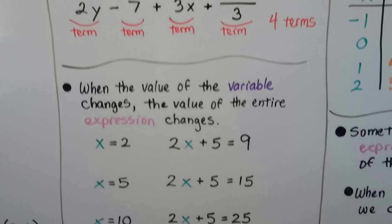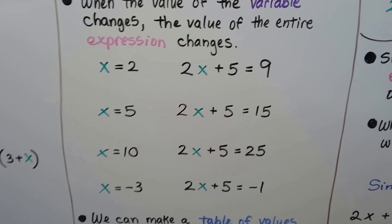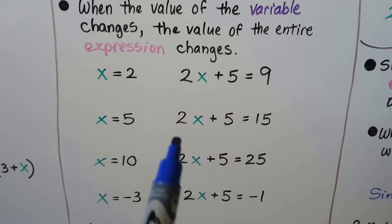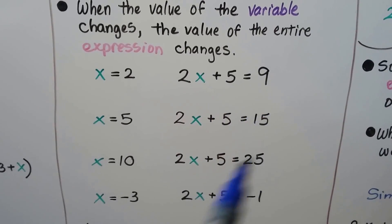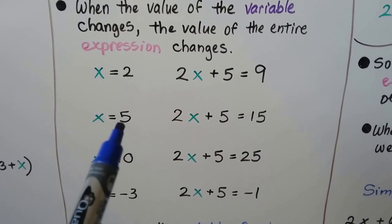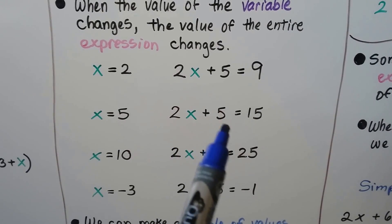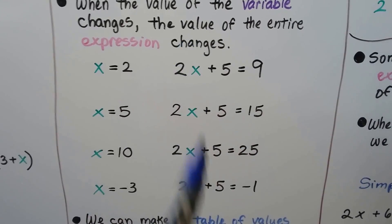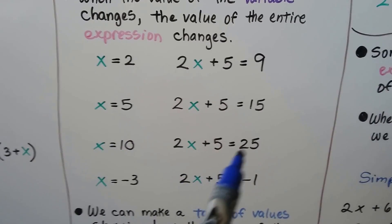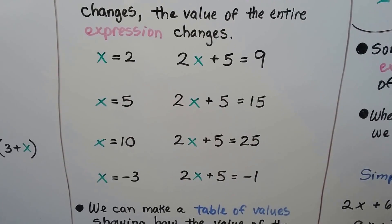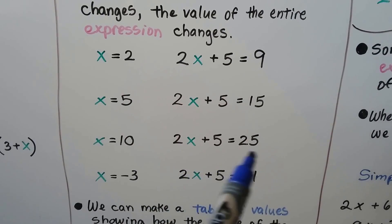When the value of the variable changes, the value of the entire expression changes. If x equals 2, then 2 times 2 is 4 plus 5 is 9. If x equals 5, then 2 times 5 is 10 plus 5, that's 15. If x is 10, we have 2 times 10 plus 5 — that's 25.